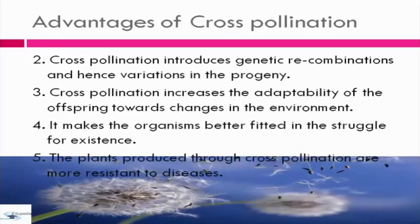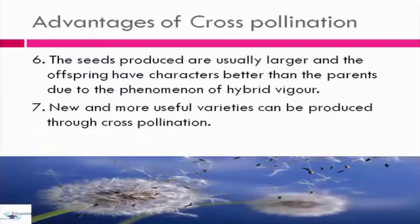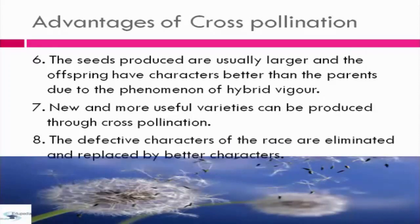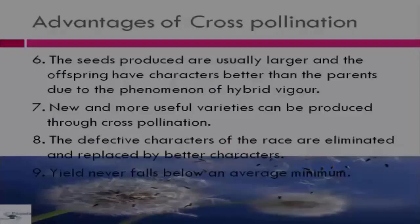Fifth, plants produced through cross-pollination are more resistant to disease. Additionally, the seeds produced are usually larger and offspring have characteristics better than the parent due to the phenomenon of hybrid vigor. New and more useful varieties can be produced through cross-pollination. Defective characteristics are eliminated and replaced by better characters, and yield never falls below an average minimum.